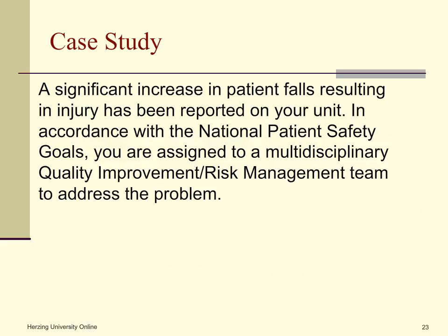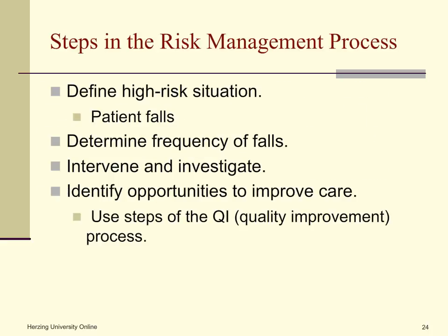Let's look at this case study: a significant increase in patient falls resulting in injury has been reported on your unit. In accordance with the national patient safety goals, you are assigned to a multidisciplinary quality improvement and risk management team to address the problem. The steps in the risk management process are: define high-risk situations — in this case, patient falls; determine frequency of falls; intervene and investigate; and identify opportunities to improve care using the steps of the quality improvement process.